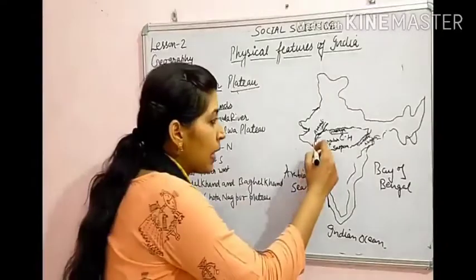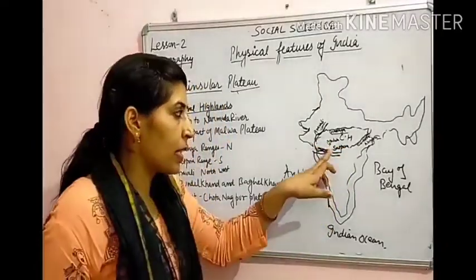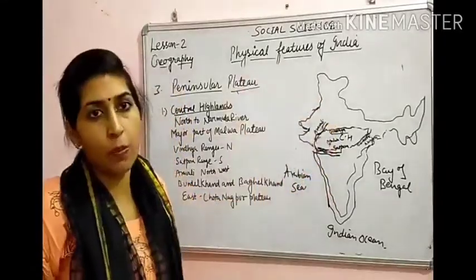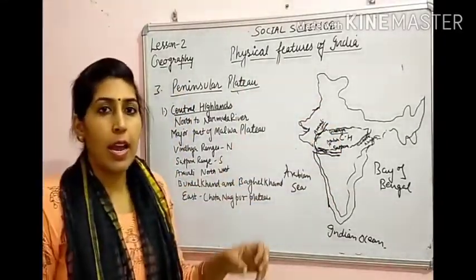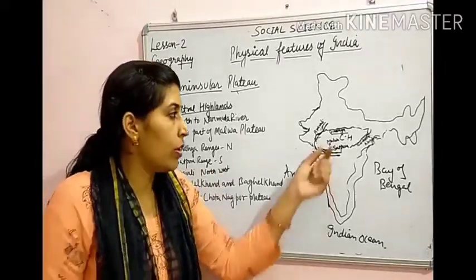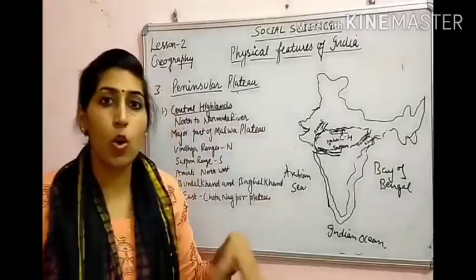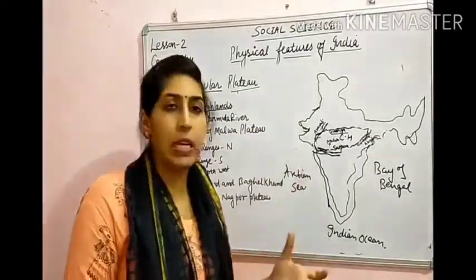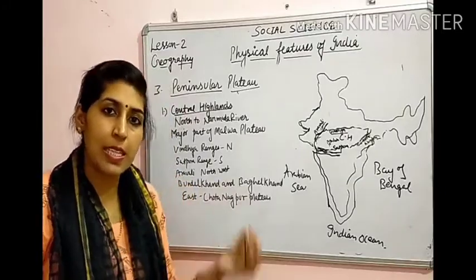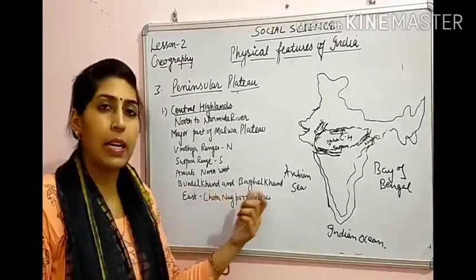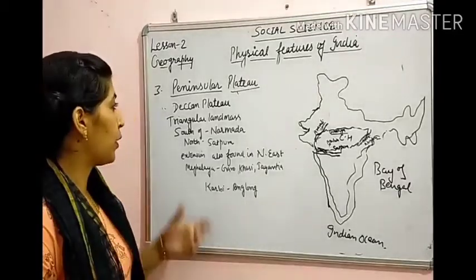Central Highland को regionally अलग-अलग local names से जाना जाता है। मध्य प्रदेश में इसे locally Bundelkhand और Bagelkhand कहा जाता है। The second part of the Peninsular Plateau is the Deccan Plateau, जिसकी एक triangular shape है।